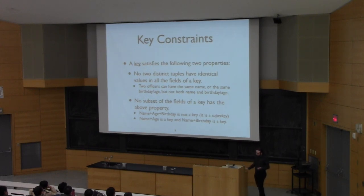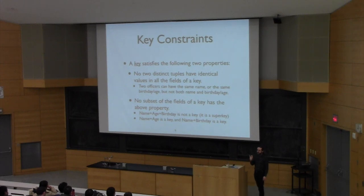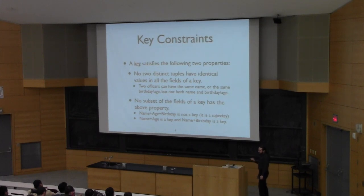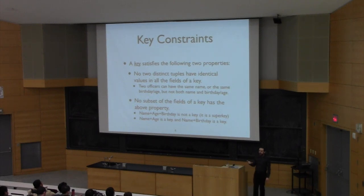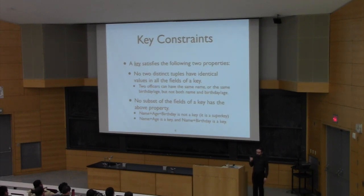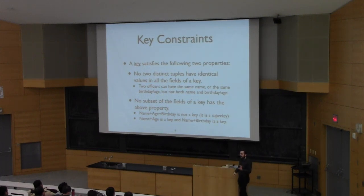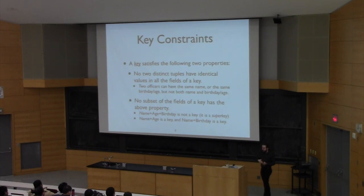A key is basically just a way of uniquely identifying a tuple — no two tuples can have the same values for a given key attribute. Importantly, a key has to be minimal. It can't be the case that name and age and birthday together form a key, because you can take away either age or birthday and still have that property satisfied. Name and age is a key, and name and birthday is a key. Any set of attributes that includes a key plus some extra attributes is called a super key.